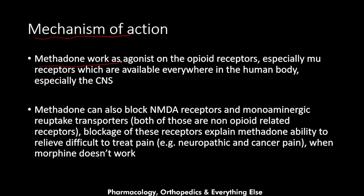Methadone works as an agonist on the opioid receptors, especially the mu receptors, which are available throughout the human body and especially in the central nervous system. This mechanism of action is shared by all other opioids. However, methadone has something not available in other opioids: its ability to block the NMDA receptors.